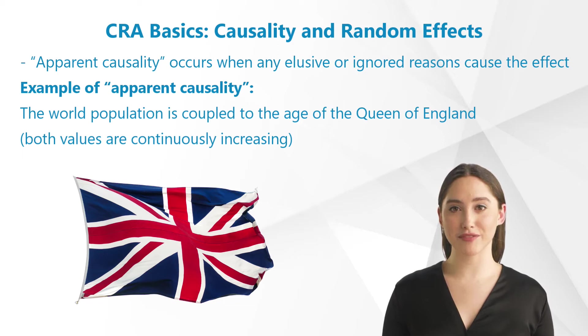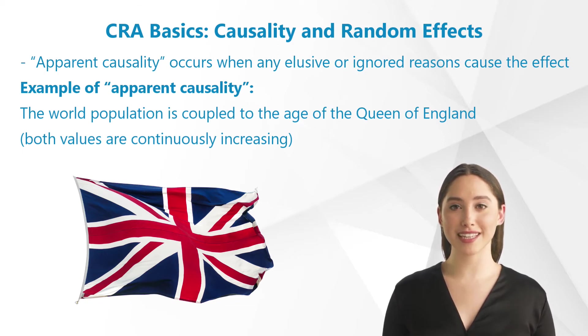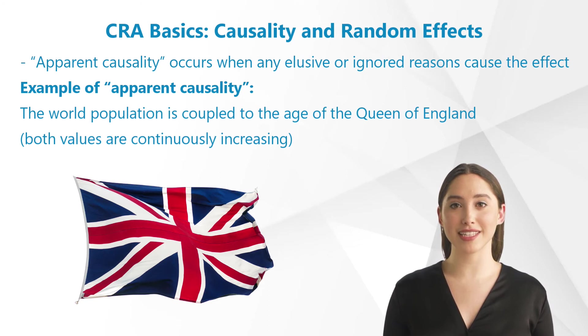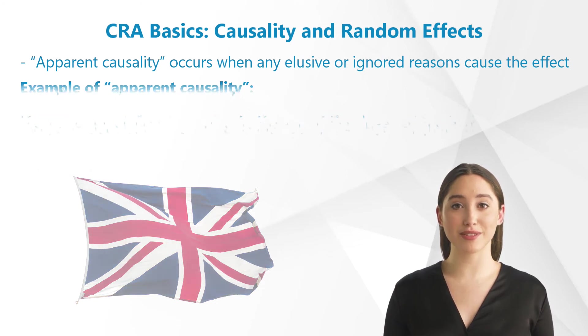An often quoted example of apparent causality is the claim that the world population is coupled to the age of the Queen of England, because both values are continuously increasing.